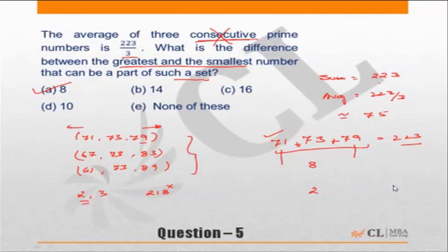This also tells me that 2 cannot be one of the prime numbers. The reason is if 2 is one of them, the sum of the other two has to be 221. But all prime numbers apart from 2 will be odd, and two odd numbers cannot give you a sum which is odd.